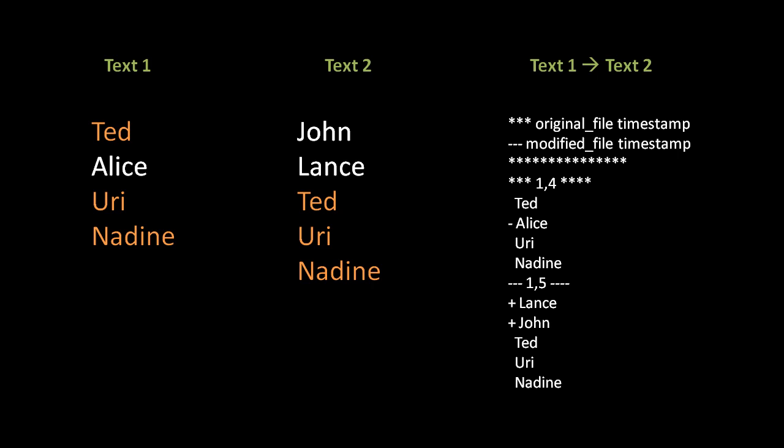So looking at this example, context diff, it starts out with a line with three asterisks and then the name of the original file and its timestamp. And then the second line has three hyphens followed by the name of the modified file and its timestamp. And then the actual content of the diff is divided into sections called hunks, denoted by a series of asterisks. In the hunk here, the three asterisks, one comma four, that denotes a section that's removing lines. And then the line with three hyphens, one comma five, denotes the start of a section that adds lines. The lines which actually get removed begin with a hyphen or a minus sign if you prefer. And the lines which actually get added begin with a plus sign. And then all the other lines there, where it says Ted, Yuri, Nadine, that's just context. One comma four between the asterisks is denoting the range of lines in the original file, which this section denotes. And then the one comma five denotes the range of lines in the modified file, which the following section denotes.